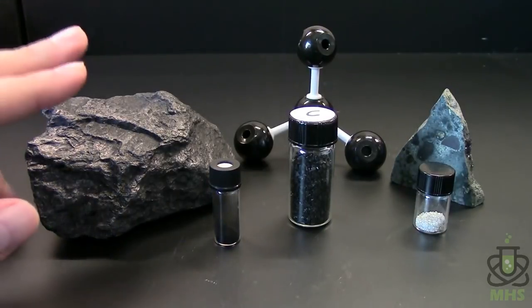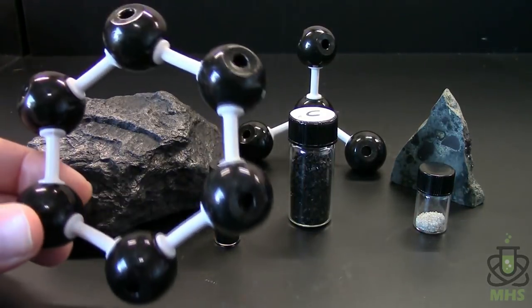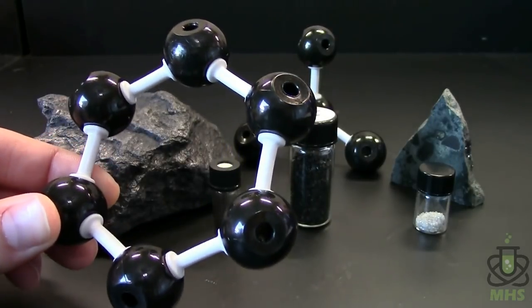On the left here is a big chunk of graphite ore, which I thought was pretty neat. I bought that on Amazon. Graphite, in contrast with diamond, is bonded in a hexagon structure.